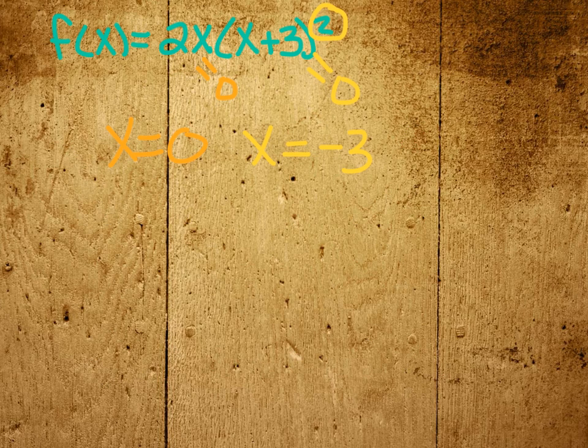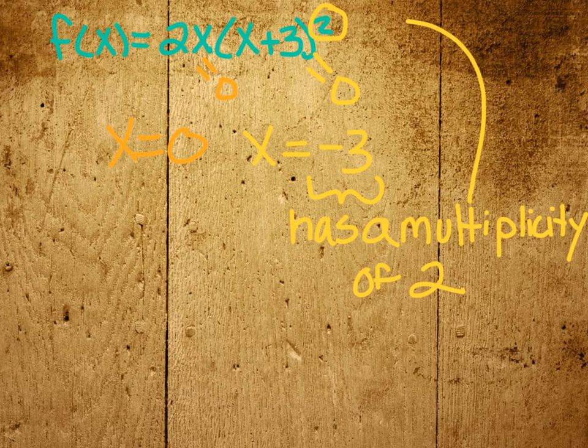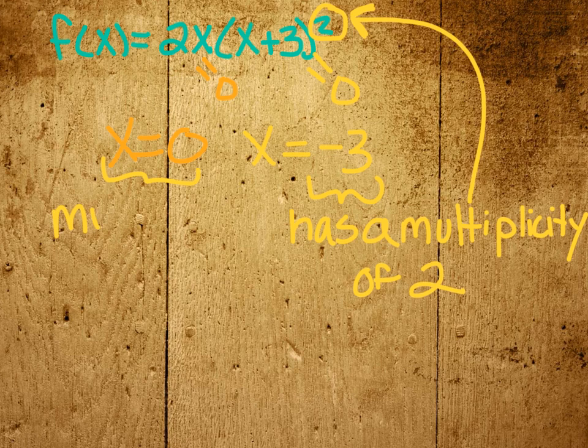So we say that this zero, negative 3, has a multiplicity of 2. Multiplicity is what we use to talk about when things repeat, when our zeros repeat. So we have a multiplicity of 2 for the zero x equals negative 3. The zero x equals zero has just a plain old multiplicity of 1.